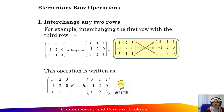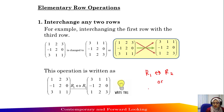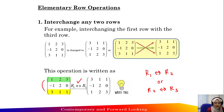The first method is interchanging any two rows. For example, interchanging the first row with the third row, the first row with the second row, or the second row with the third row. This operation is written as, for example, row one interchange row two, or row two interchange row three.